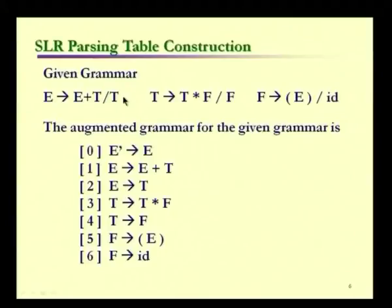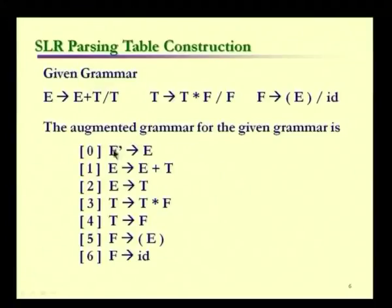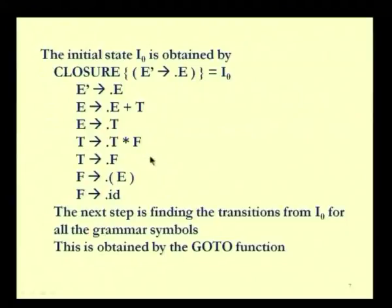Here is the expression grammar: E derives E plus T or T, T derives T star F or F, and F derives opening bracket E closing bracket or id. We have the augmented grammar by introducing the new production E dash derives E, giving us a total of seven productions. From this, we obtain the initial state i0 by applying the closure of E dash derives dot E, giving seven items in state i0.